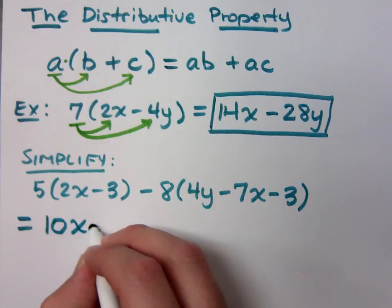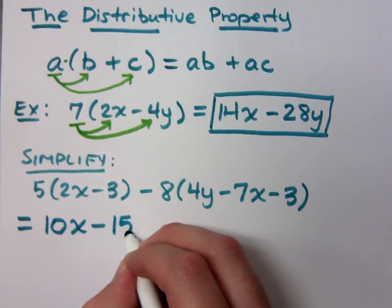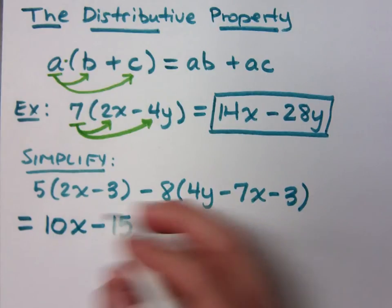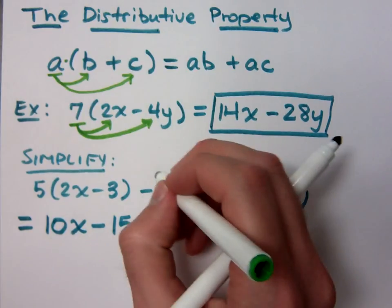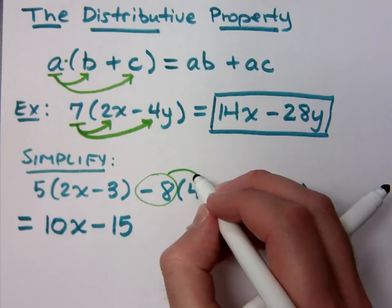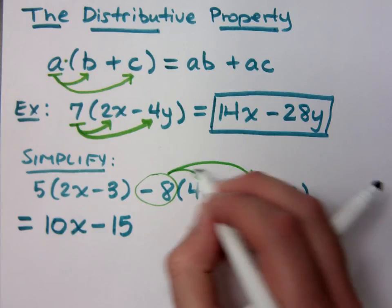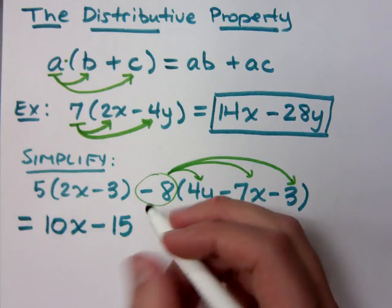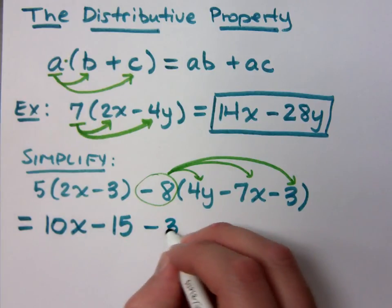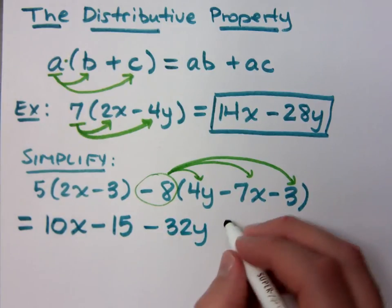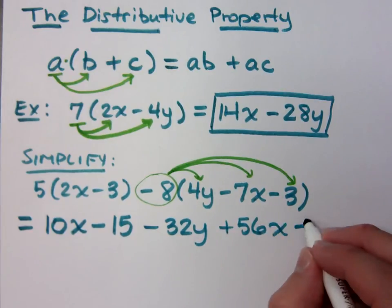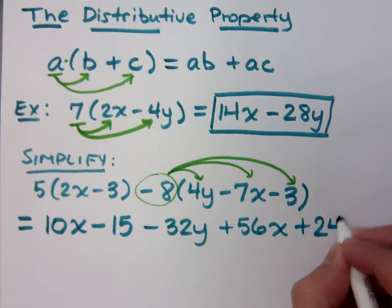Did anybody get 10x minus 15? All right, then what did you get? Because keep in mind, you were trying to take this negative 8 and distribute to these three terms, so you have to watch your signs. Minus 32y. Plus 56x. Plus 24.